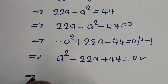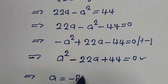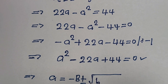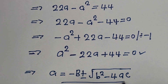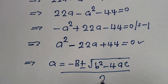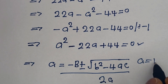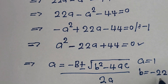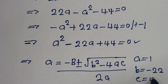From the quadratic general formula, A is equal to minus B plus or minus square root of B squared minus 4AC, all over 2A. From this equation, A is equal to 1, B is equal to minus 22, and C is equal to 44.